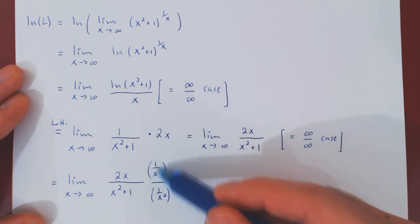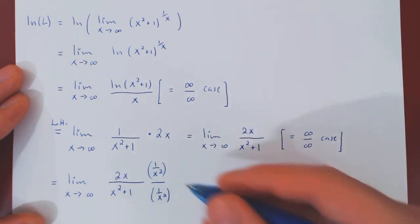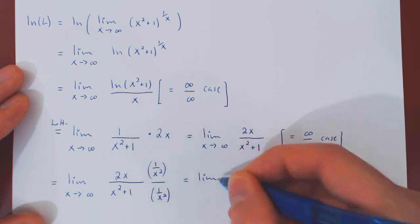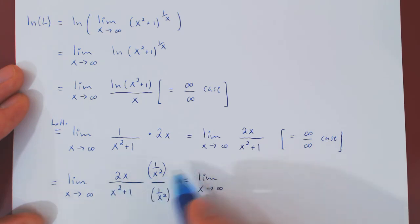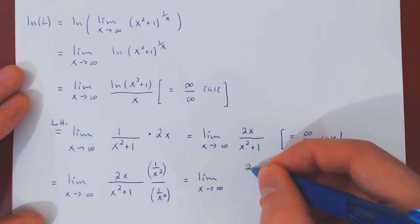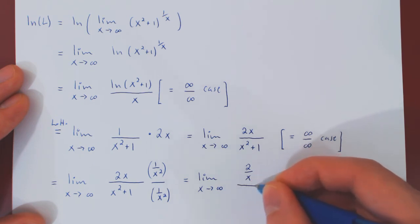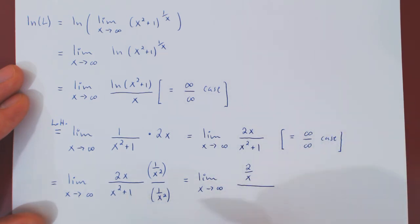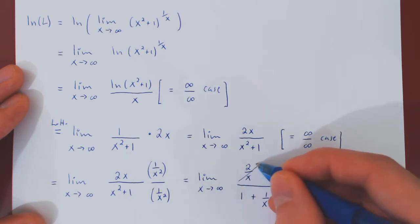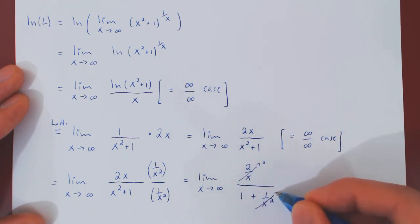And again, we're not cheating as 1 over x squared over itself is simply 1. So if you multiply through the numerator, x over x squared is 1 over x. So you have 2 over x over x squared over x squared is 1 plus 1 over x squared. And now the limit is trivial. As x tends to infinity, 2 over x tends to 0, 1 over x squared tends to 0. So we're left with 0 over 1, which is of course simply 0.